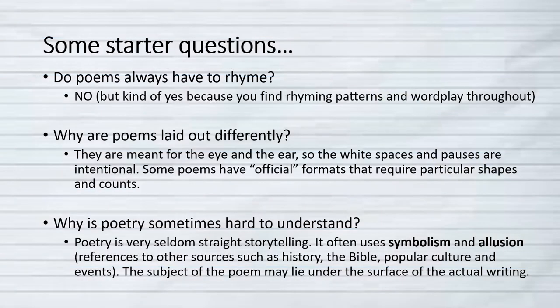First, some starter questions about the poetry form. Do poems always have to rhyme? No, but kind of yes, because you will find rhyming patterns and wordplay throughout poems. Sometimes it rhymes at the end of the line, and sometimes there are rhyme tricks performed within a line or across a couple of lines. Why are poems laid out so differently than novels or short stories? Because they are meant for the eye and the ear, so the white spaces and pauses are intentional. Some poems have an official format requiring particular shapes and counts — the number of syllables and beats per line — but many poems are designed to have open space on the page as well as planned pauses for your ears.